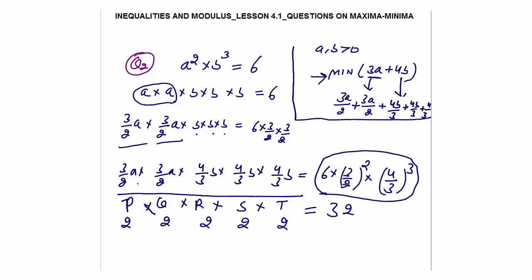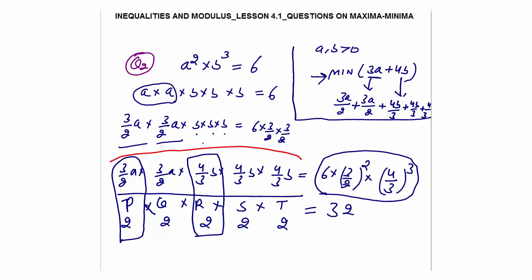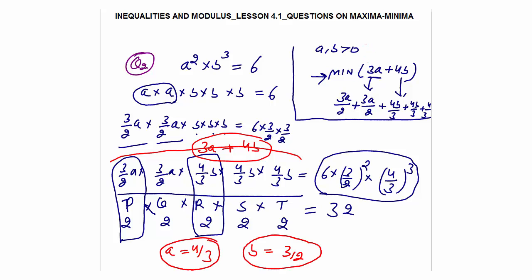So 3a/2 = 2, giving a = 4/3, and 4b/3 = 2, giving b = 3/2. The sum of the two 3a/2 terms is 3a, and three 4b/3 terms gives 4b, so 3a + 4b is minimum when all equal 2. Minimum value = 3 × (4/3) + 4 × (3/2) = 4 + 6 = 10.